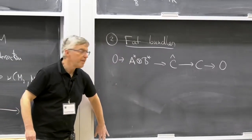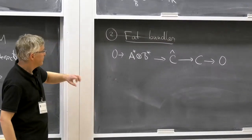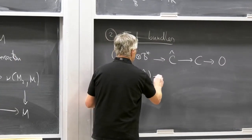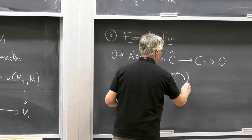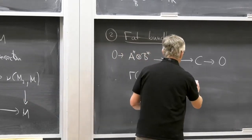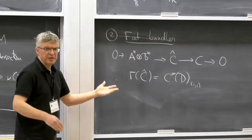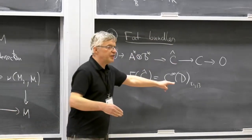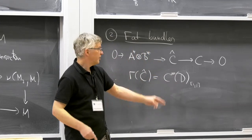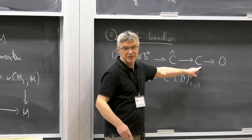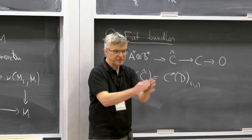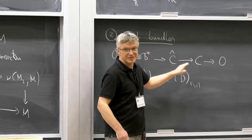What is C-hat? In terms of sections, these are smooth functions on D that are linear in both directions — double linear functions. If you have a double linear function on D and restrict to the core, it becomes a linear function, so that's the quotient map. You can pull back a linear function on A and a linear function on B, multiply together, and get a double linear function — that's this map.